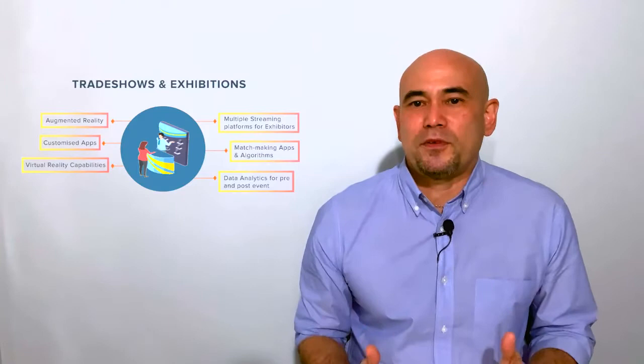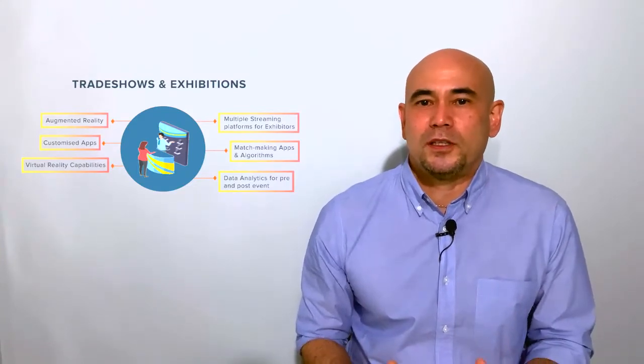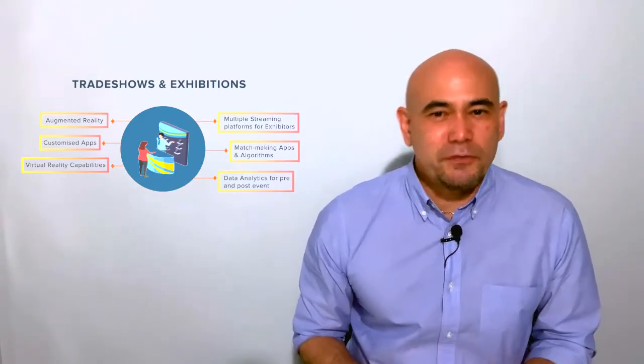So for the third type of event that I want to speak about would be the trade shows and exhibitions. So what are they? Self-explanatory I suppose, and these are the large-scale industry conferences or trade shows that usually garner at least 1,500 to 2,000 participants when held as an in-person event. To go online these kinds of events require higher levels of video production so that virtual attendees are provided a similar quality to in-person attendees, especially when going hybrid.